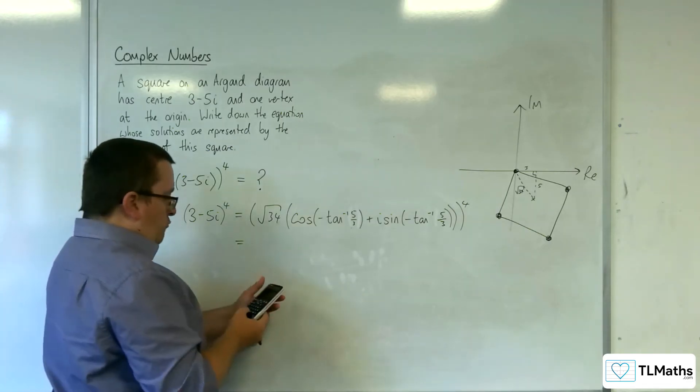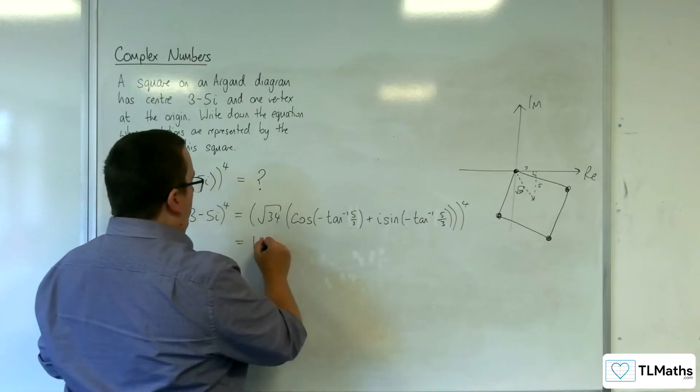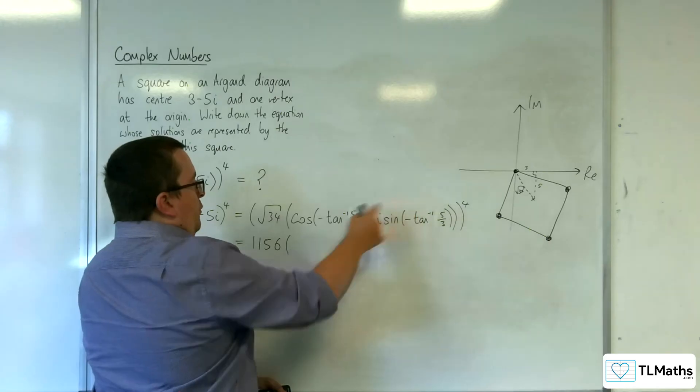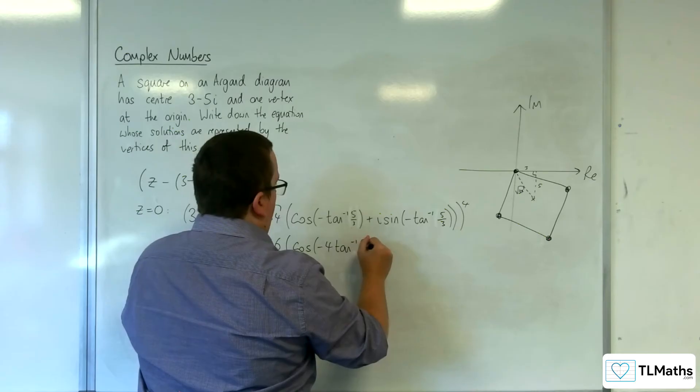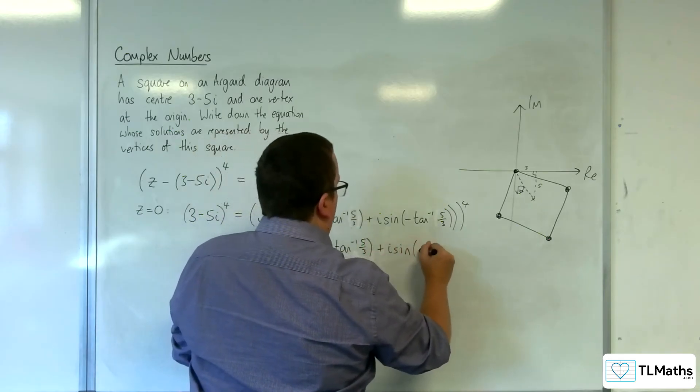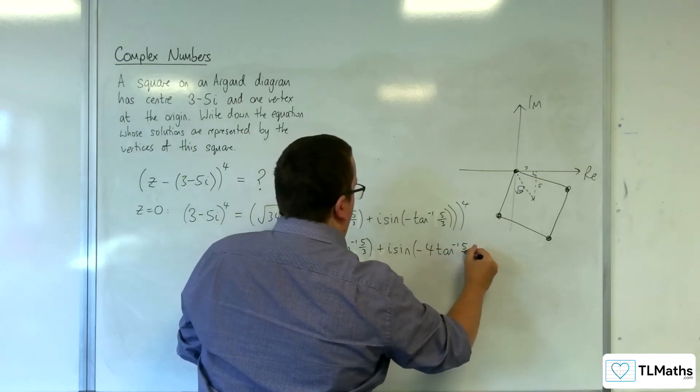So we've got √34, and that's going to be to the power of 4, so that's 1156. Then using De Moivre's theorem, the 4 can come inside here, so we're going to have cos(-4tan^(-1)(5/3)) + i·sin(-4tan^(-1)(5/3)).